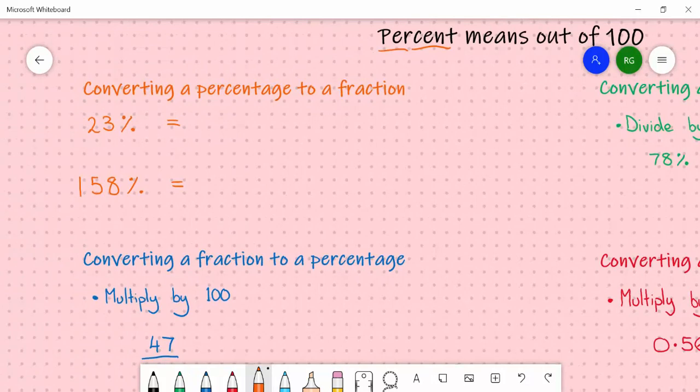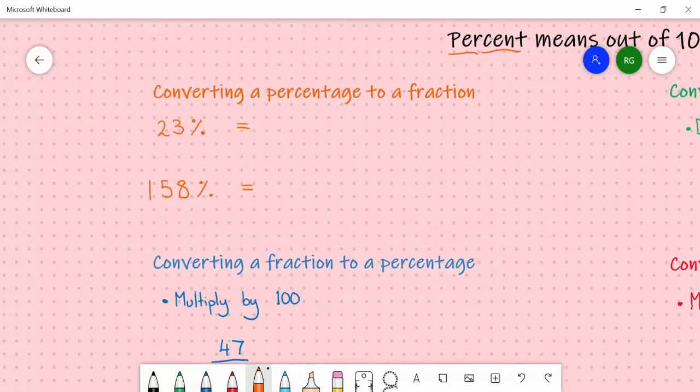We have a couple of examples. We have 23%. Now 23% means 23 per 100. So we can write that as 23 out of 100, or 23 one hundredths.